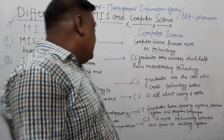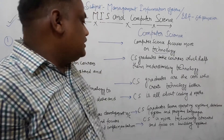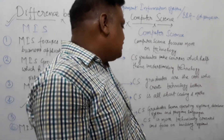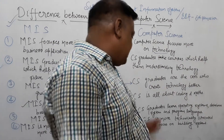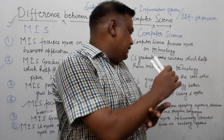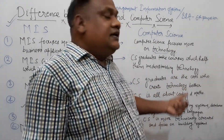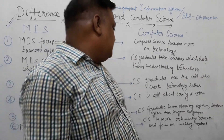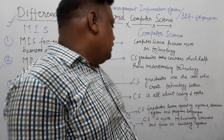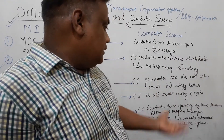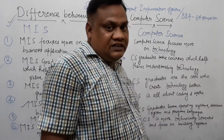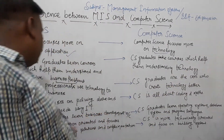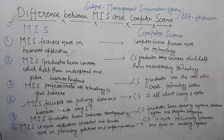CS — Computer Science — graduates learn about operating systems, databases, and programming languages. This is the basic difference between MIS and Computer Science.